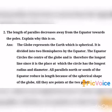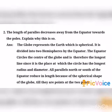Big question, second question: The length of parallels decreases away from the equator towards the poles. Explain why this is so. Answer: The globe represents the earth, which is spherical. It is divided into two hemispheres by the equator. The equator circles the center of the globe and is therefore the longest line, as it is the place at which the circle has the longest radius and diameter. All parallels north or south of the equator reduce in length because of the spherical shape of the globe, till they are points at the two poles.